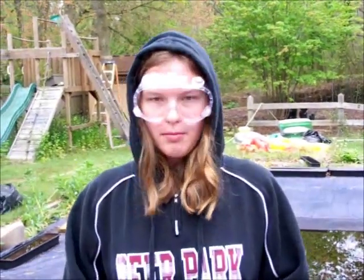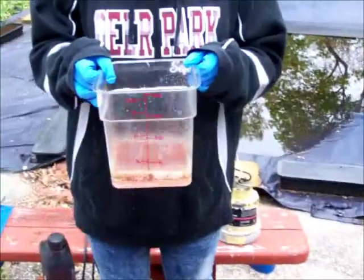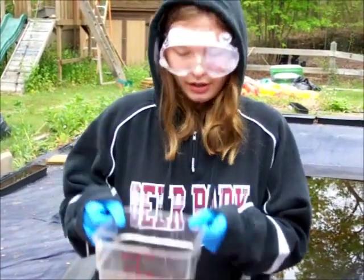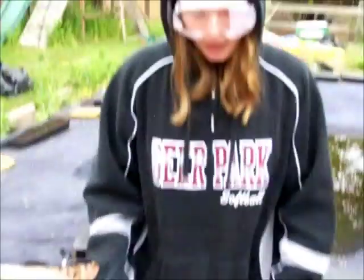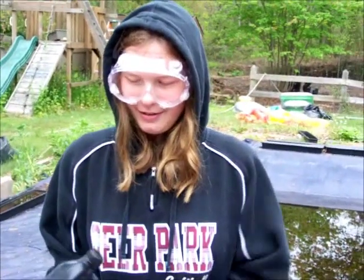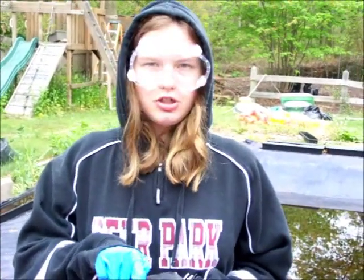For the purposes of this experiment, we're going to do it in reverse. Normally you would have the oil spill on top of the water table and then add Fenton's Reagent — our mixture of iron and hydrogen peroxide. However, instead, we're going to add our oil on top of Fenton's Reagent, because it just shows the reaction better. Which is what I'll do right now.